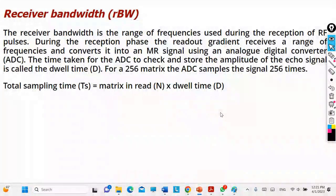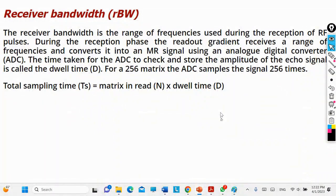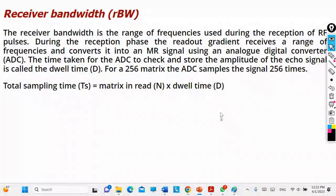When I say the receiver bandwidth is large, I am telling my machine to reduce the sampling time, meaning to decrease the time you are recording the signal. This means receiving more frequencies, but it also means reducing the resolution of the image and decreasing the signal-to-noise ratio (SNR).